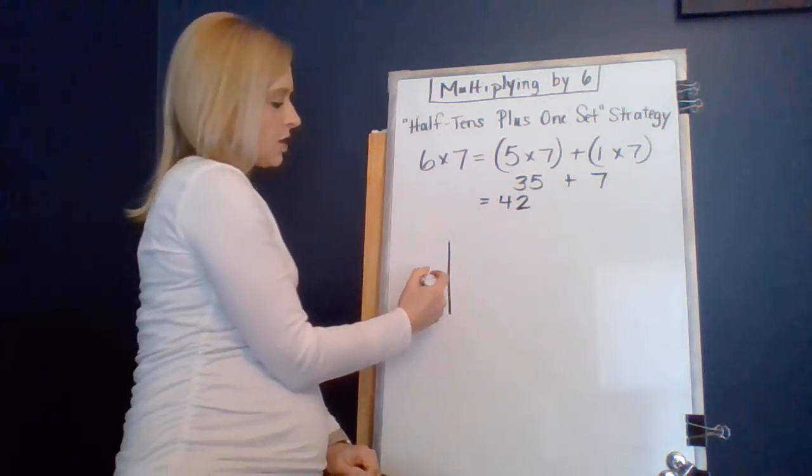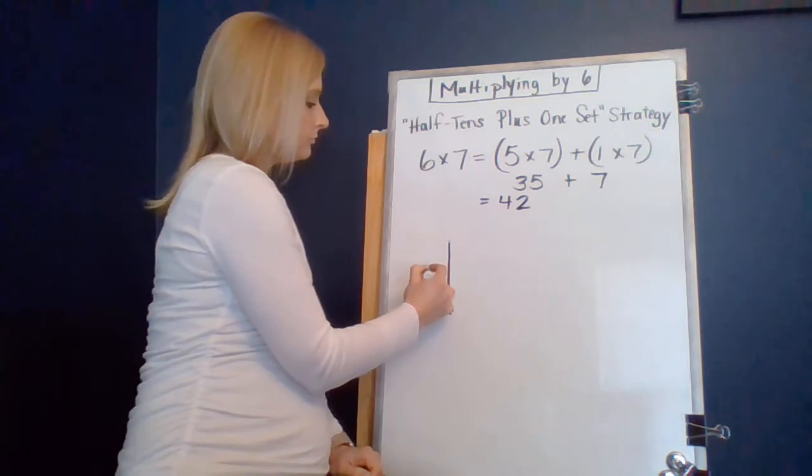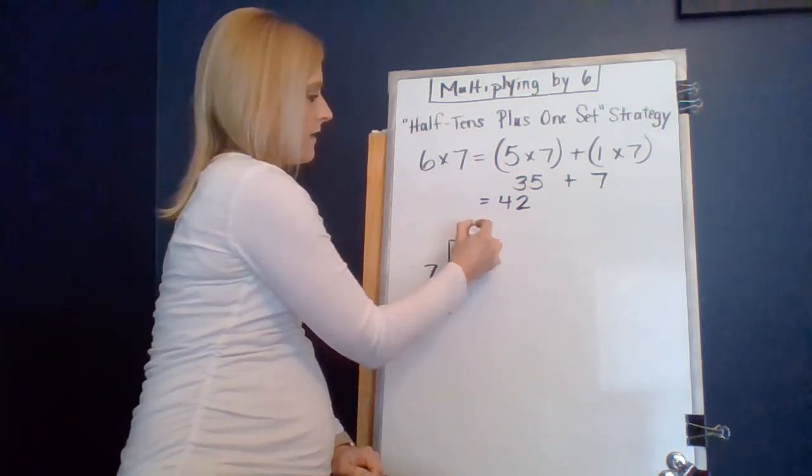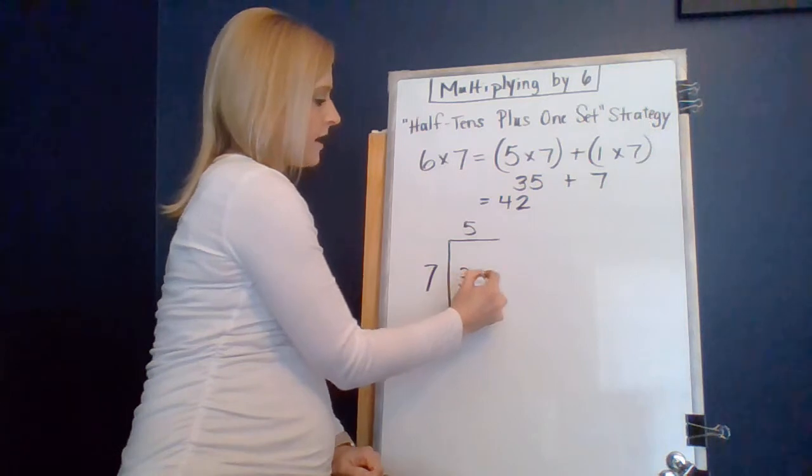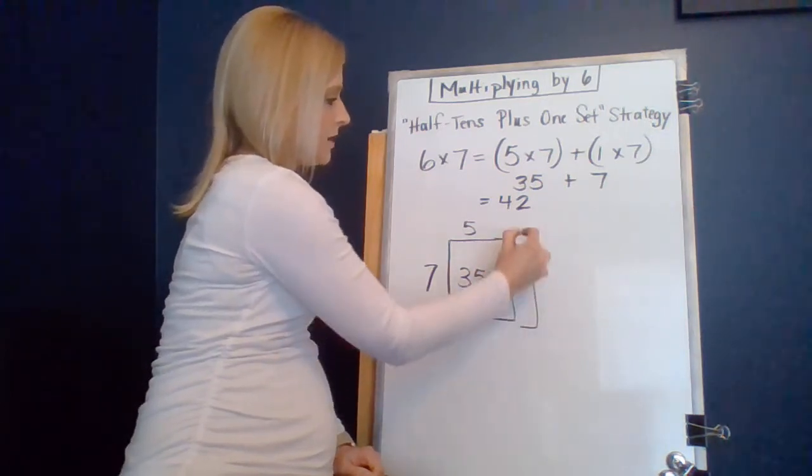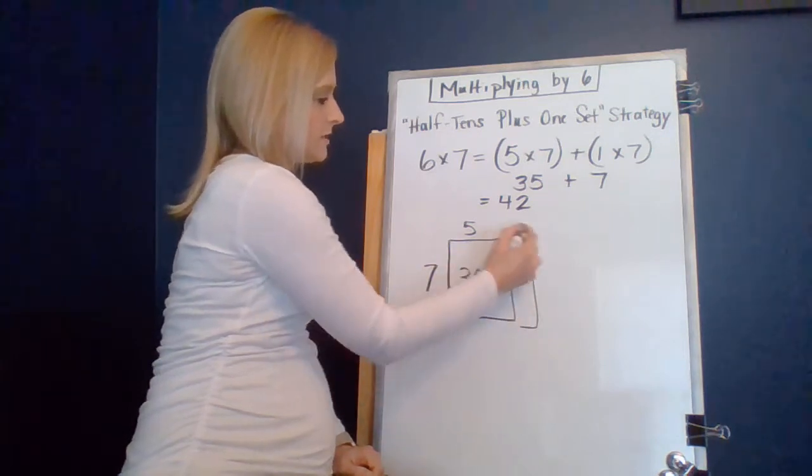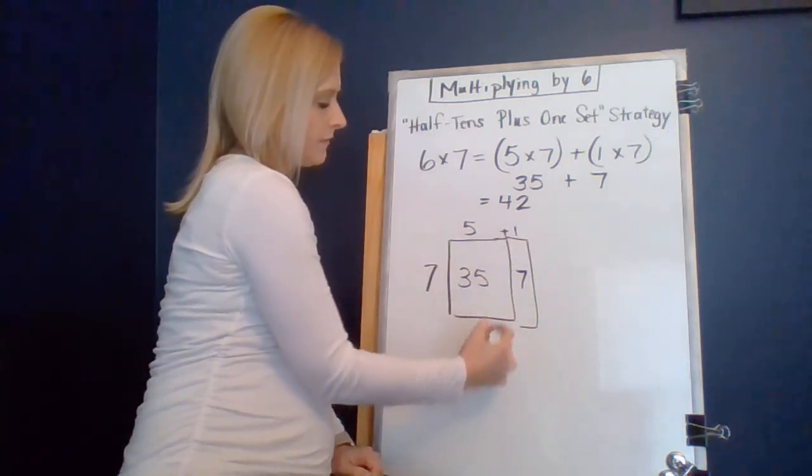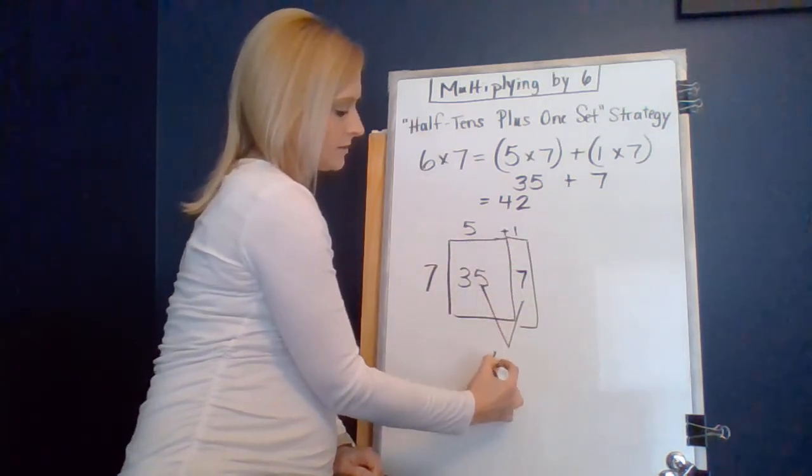If you want to think of it in terms of the area model, we have 7. We find 7 times 5 is 35. And we add one more set to that. We get 7 times 1 is 7. 35 and 7, that makes it 42.